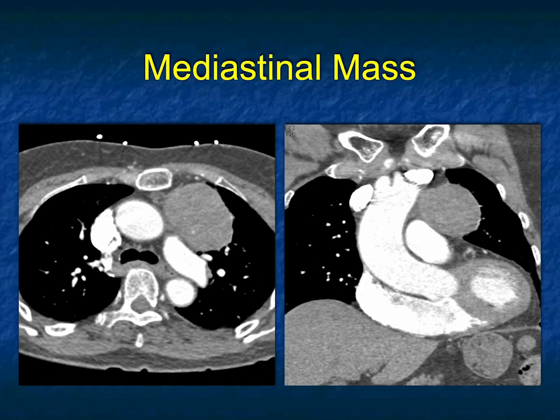Anterior mediastinal mass, eccentric and solid. Could be lymphoma — not the greatest appearance. Thymoma — that's what you've got to be thinking. Solid mass, eccentric. Teratoma — I like to see fat, fluid, or calcification. Metastasis, lymphoma — the three T's and an L. But an eccentric solid mass like this, teratoma is the answer.